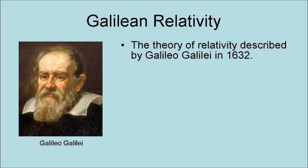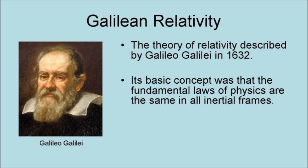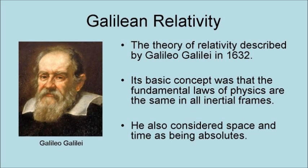The first proposed theory of relativity was described by Galileo Galilei in 1632. Its basic concept was that the fundamental laws of physics are the same for all inertial frames. He also considered space and time as being absolutes.